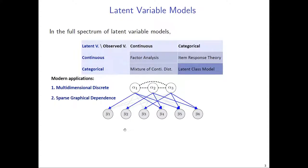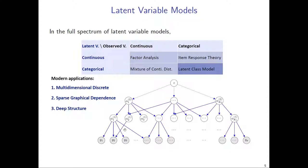The second desirable feature is sparse graphical dependence in the model — for example, not all the latent variables are connected to each observed variable. Such sparse graphical dependence between the latent and observed layer can greatly enhance the interpretability of the model. And finally, an important aspect we want to consider is deep latent structure — how to use deep latent structure to model complex and high-dimensional modern datasets.